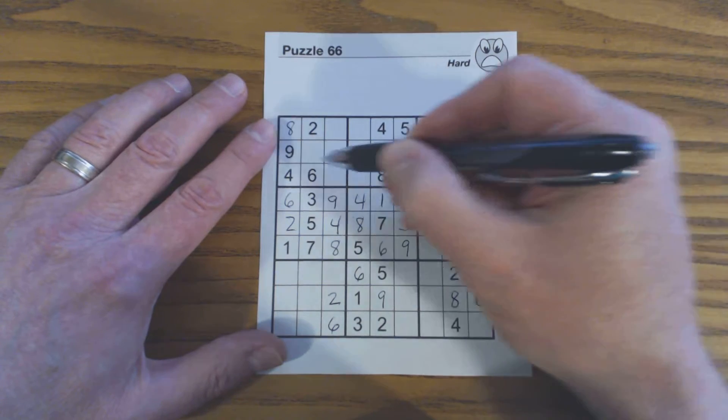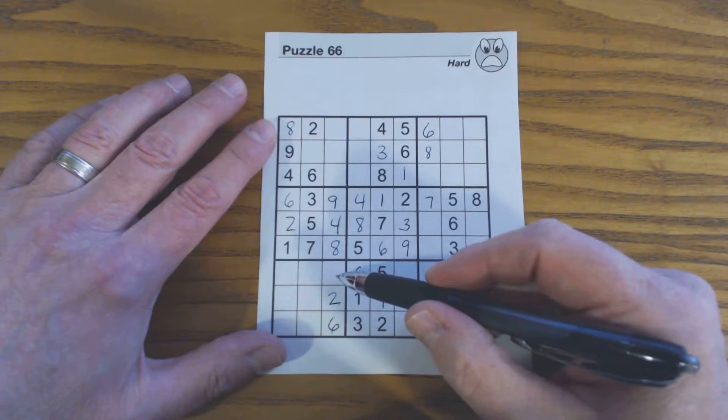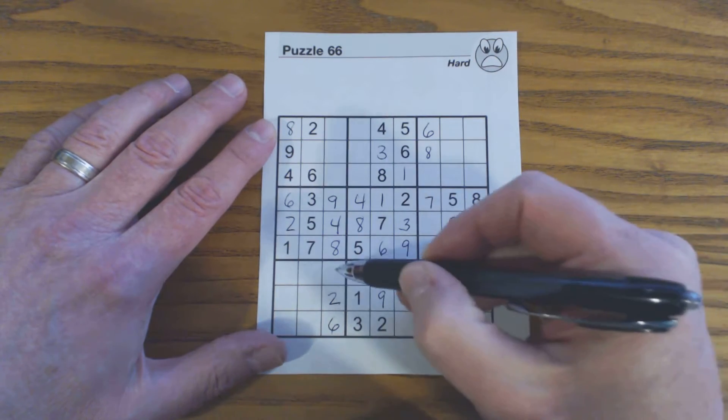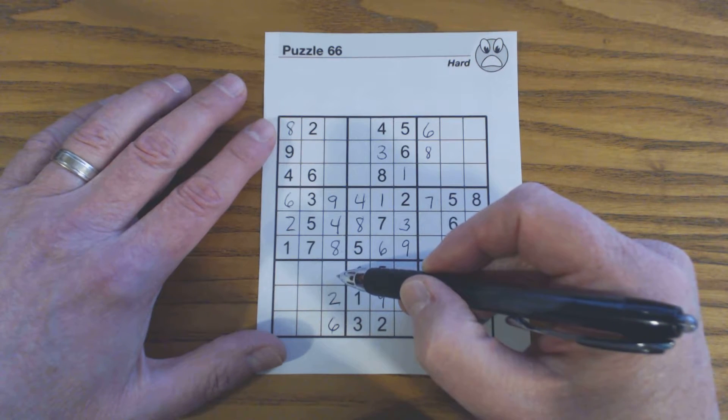There's a 3 in this row here, so this can only be a 1, 5, or a 7. Down here there's a 5 and a 7 in this row, so this can only be a 1 or a 3.